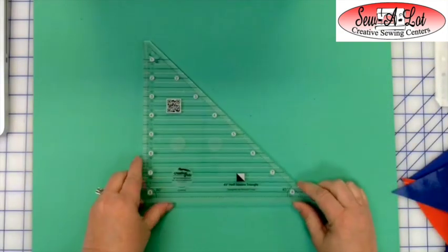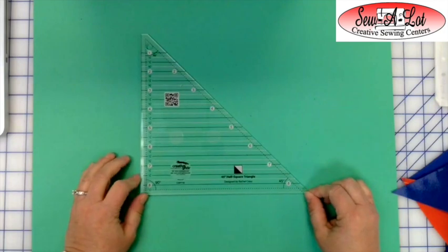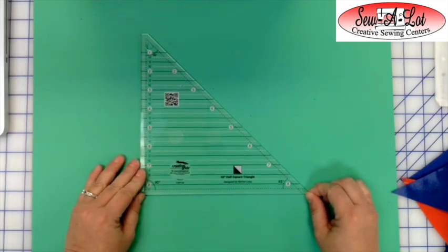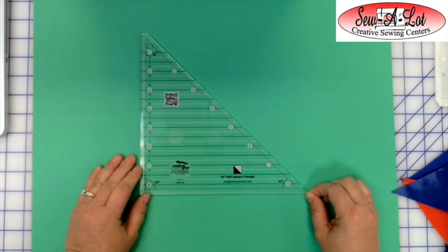First, we're going to talk about the 45 degree triangle. I'm going to show you how to use it, and then we'll talk about the 90 degree quarter square triangle and how to use it, and then we'll talk about how it applies to our Heritage Block of the Month.